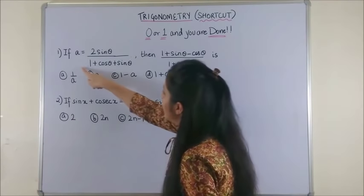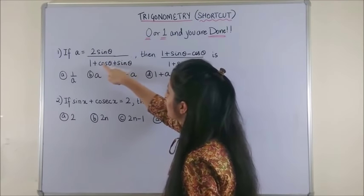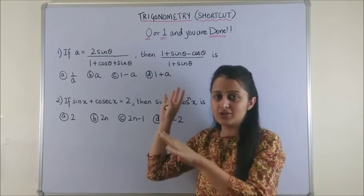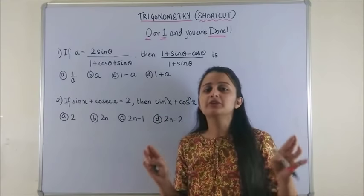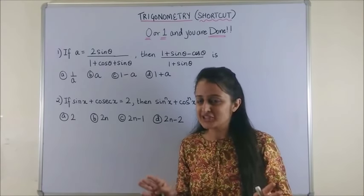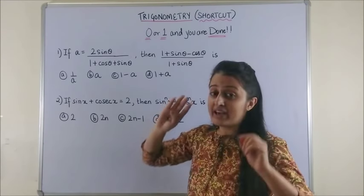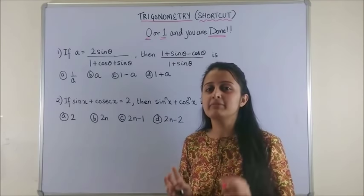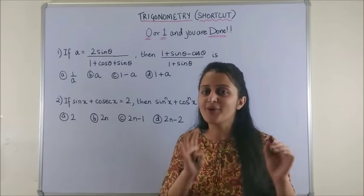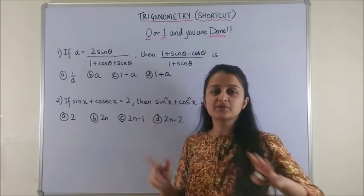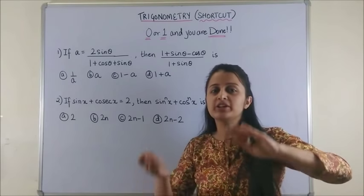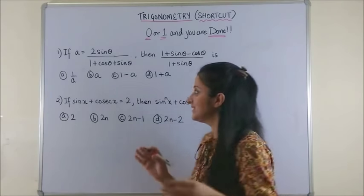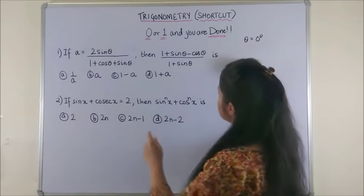So, if you are given A is 2sinθ upon 1 plus cosθ plus sinθ, then you have to find out this huge looking expression where you don't really have to get into the traditional method. You have to carefully select θ, which would make your calculations very easy by making maximum terms as 0 or 1. Like in the first question, you know if you take your θ to be 0 degrees or 90 degrees, which works the best for sinθ or cosθ. So, let me try θ as 0 degrees.